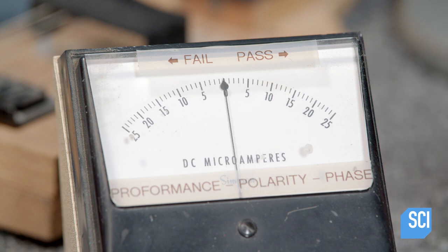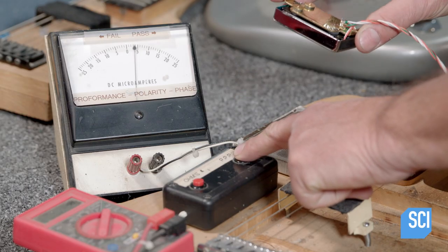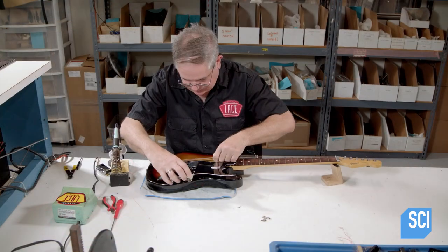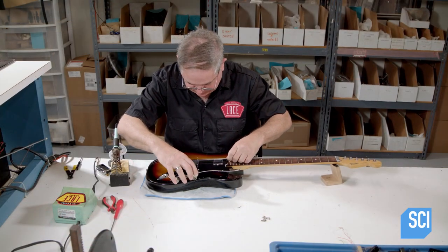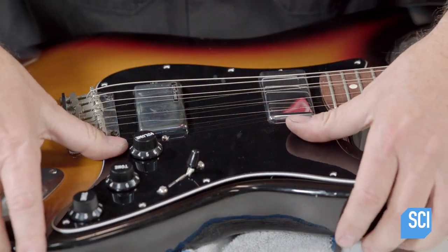He also tests the direction the current travels through the pickup. This is called phase. And he assesses the strength of the magnetic field. This is known as polarity.